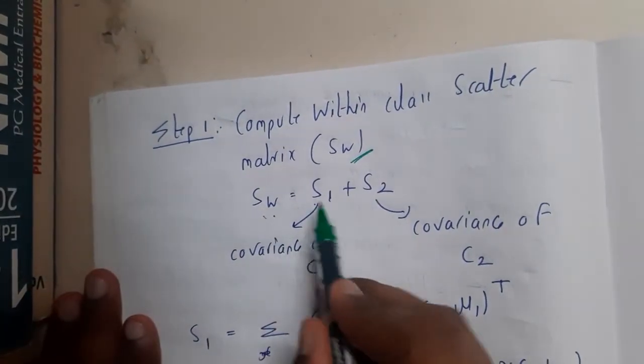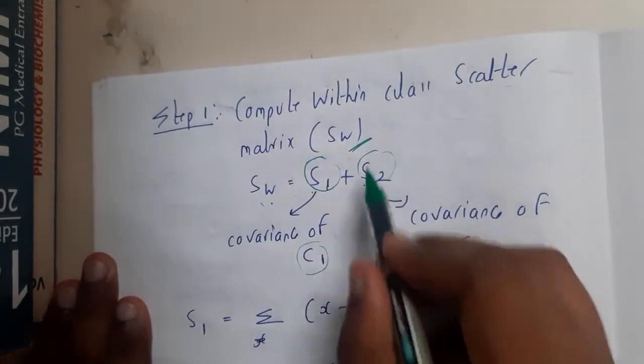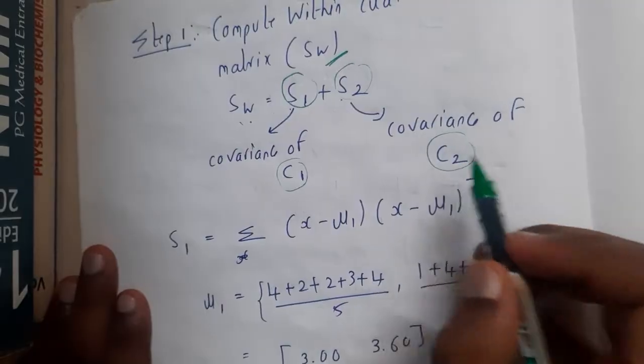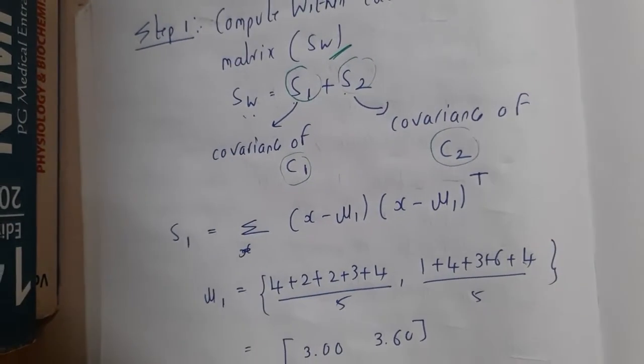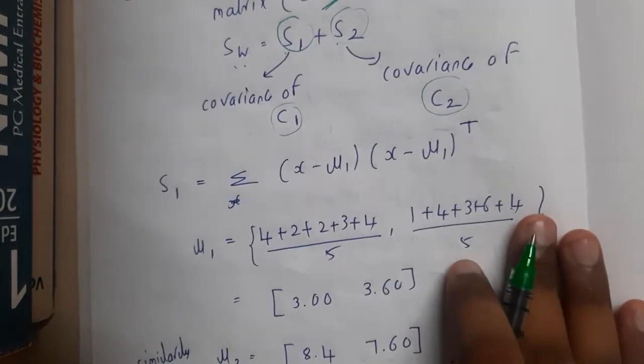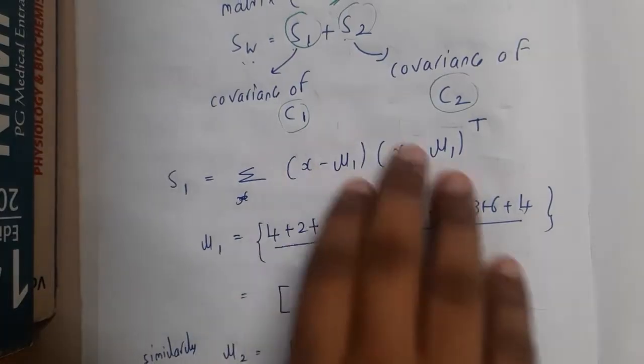Firstly, we'll be computing the within-class scattering matrix. That is nothing but Sw equals S1 plus S2. So S1 is nothing but covariance of C1, S2 is nothing but covariance of C2. If you recall, we already know the formulas of covariance and all those things.